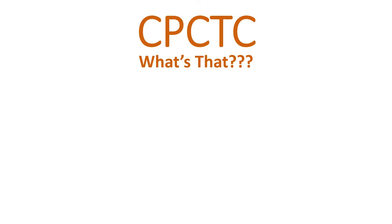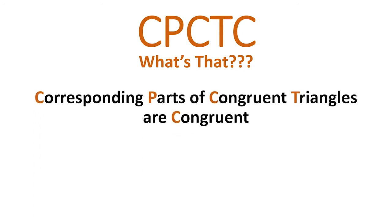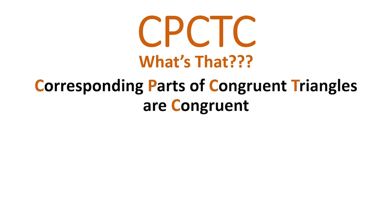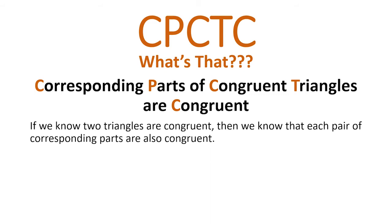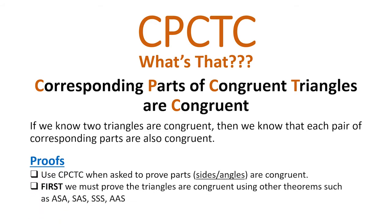CPCTC stands for 'Corresponding Parts of Congruent Triangles are Congruent.' If we know that two triangles are congruent, then each pair of corresponding parts is also congruent. In proofs, you can use CPCTC when asked to prove certain angles or sides are congruent — but you must first prove the triangles are congruent using theorems like ASA, SAS, SSS, or AAS. Please see my video on triangle congruence theorems if you're not familiar with these.